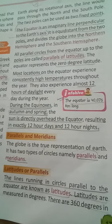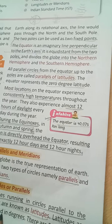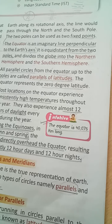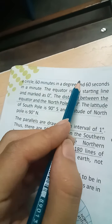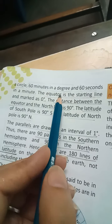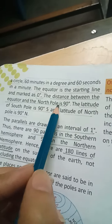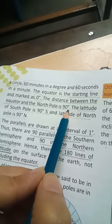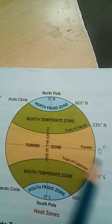Latitudes are lines running in circles parallel to the equator. They are measured in degrees. There are 360 degrees in a circle, 60 minutes in a degree, and 60 seconds in a minute. The equator is the starting line and is marked as zero degrees. The distance between the equator and the north pole is 90 degrees.